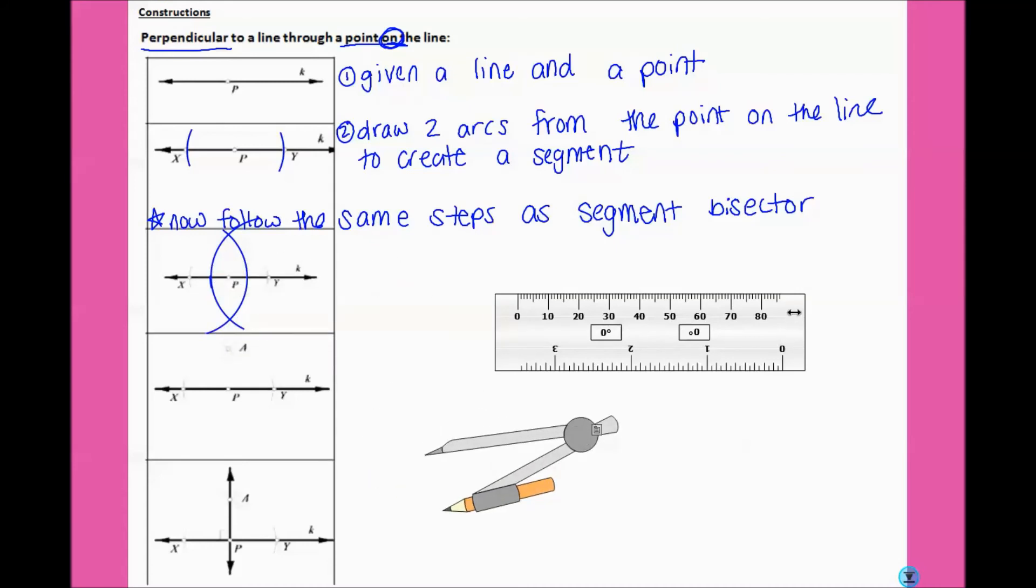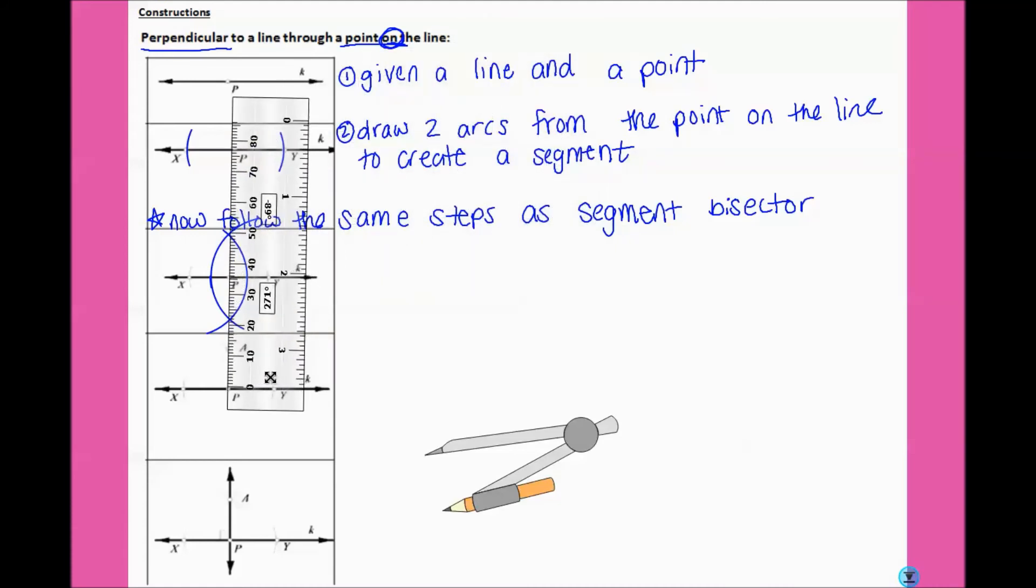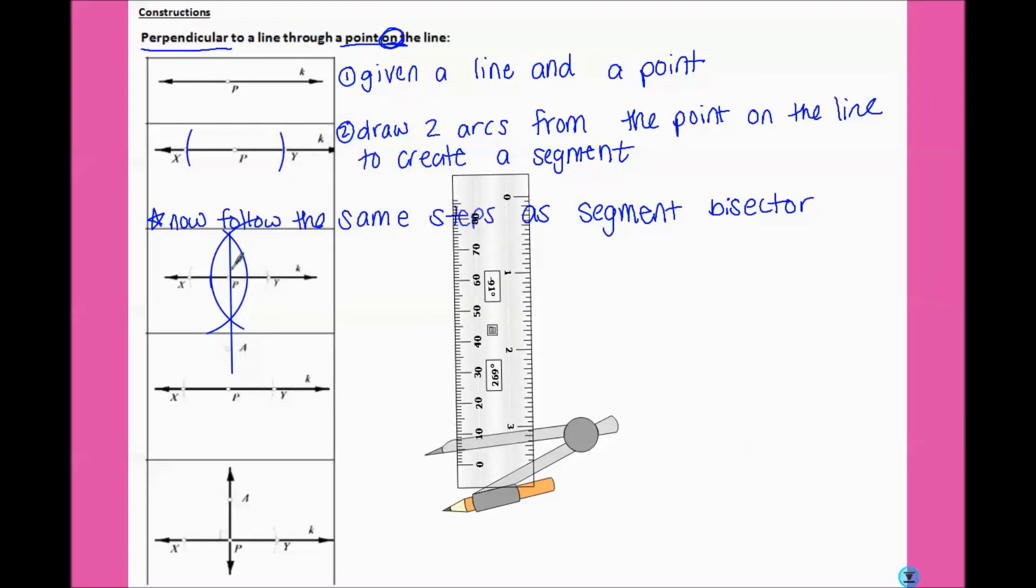Then use our straight edge. Make sure it goes through the intersection of both points. And there's our perpendicular bisector going through the point on our line.